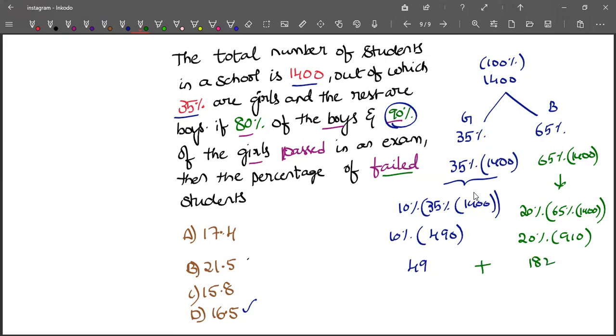This sum gives us the total number of students who failed in the exam. How much is it? 182 plus 49 is 231. So out of 1400 students, 231 students failed in the exam.